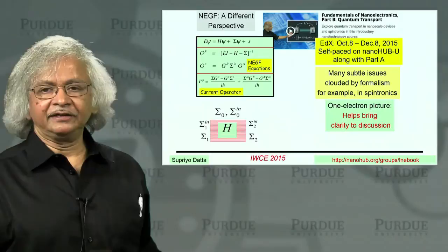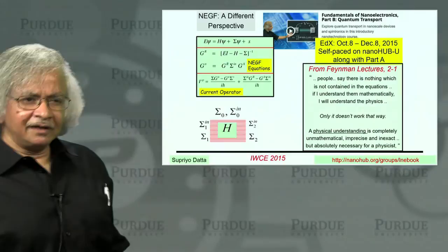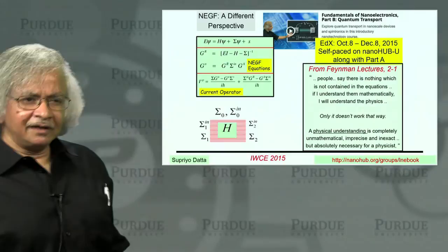Because I guess I'll end by reminding you of this little quote from Feynman, where he points out that, you see, even when you have all the equations, in order to think, you need a picture, even if it is not exact. And what I believe is the one electron picture kind of gives you that physical insight, that picture to visualize the NEGF equations. Thank you.